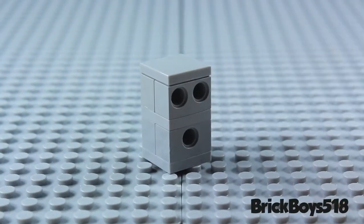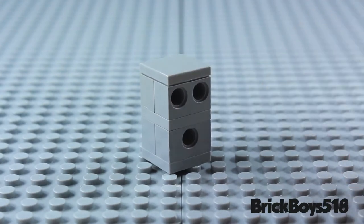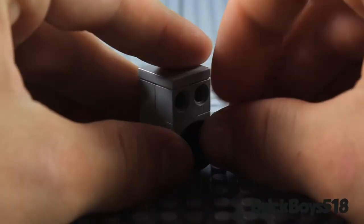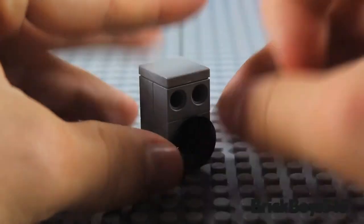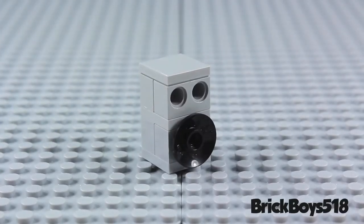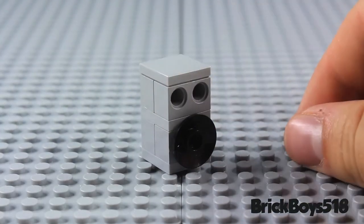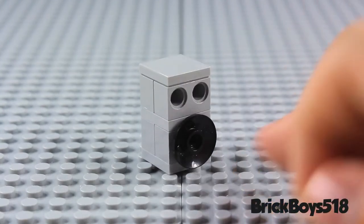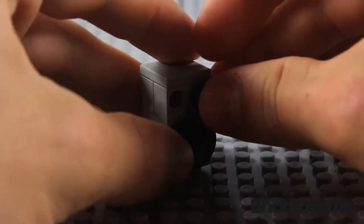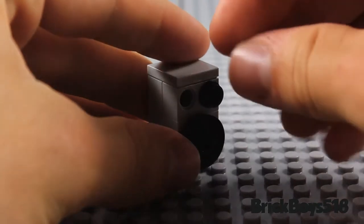Now you're going to take one of these dish elements here, and I'm using black, but you can use whatever color you'd like. And you're just going to put it stud in to the hole on the bottom. Then you're going to take two 1x1 studs, and you're going to want them to match the dish element that you're putting in there. I'm using black. And you're just going to pop them right in the top.